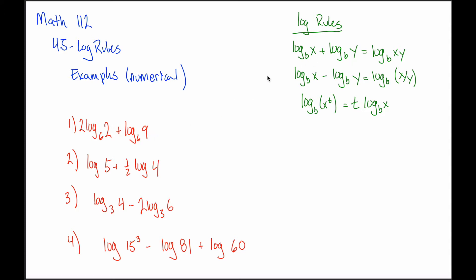So if you want to use the first log rule, we first have to take care of this coefficient. I'm referring to the third log rule: when we introduced it, we said if you have an exponent you can bring it down in front of the log. But if this is equal to that, then that is also equal to this — so if I have a coefficient in front, I can move it back up and make it an exponent. The third log rule allows me to rewrite this as log base 6 of 2 squared, which is log base 6 of 4, plus log base 6 of 9.